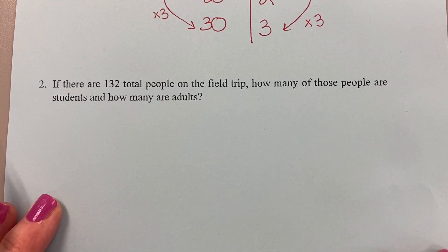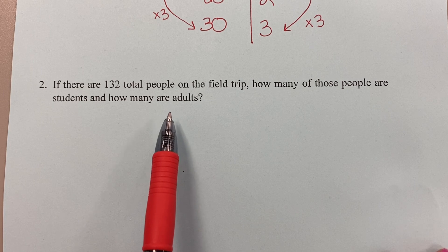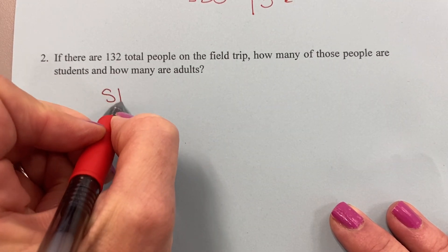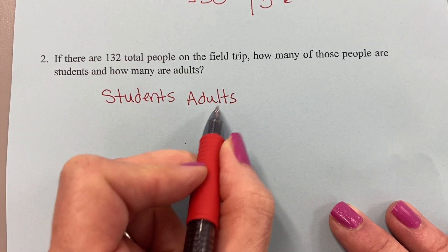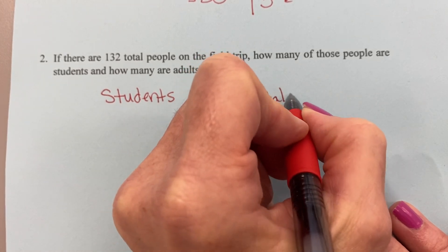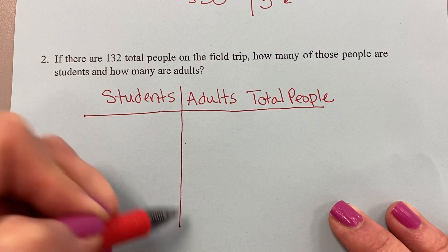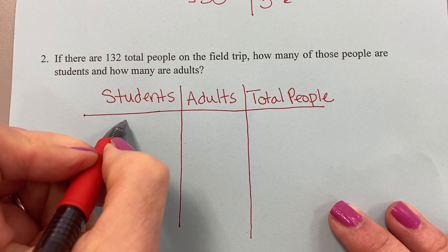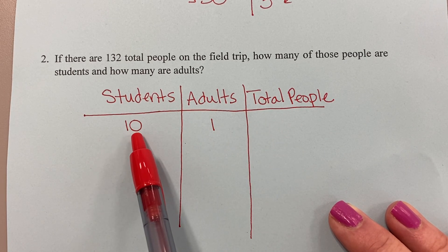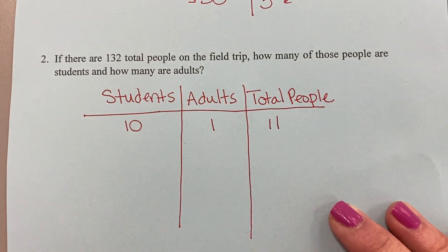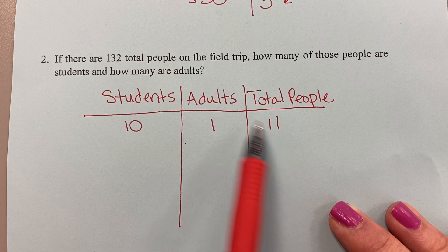Question number 2: If there are 132 total people on the field trip, how many of those people are students and how many are adults? So we know students and we know adults. But now I'm going to add a third column, total people. So now I'm going to have a table with three columns.